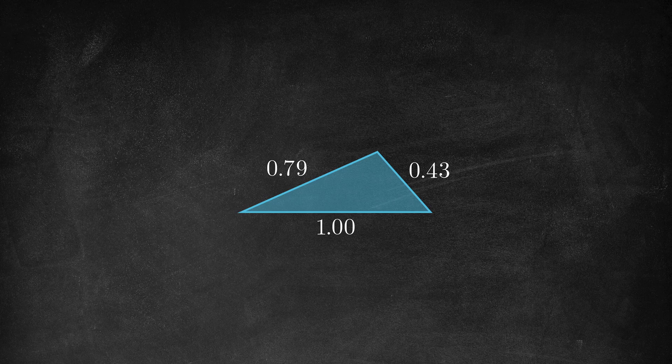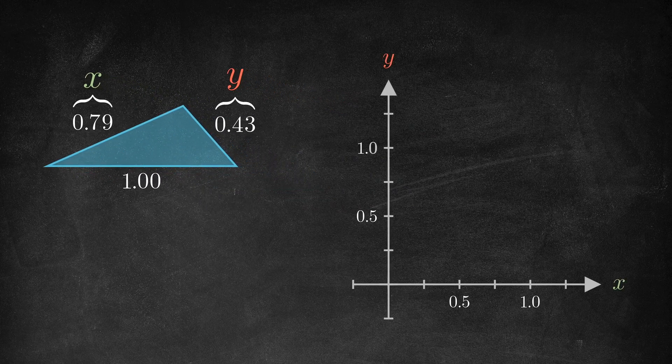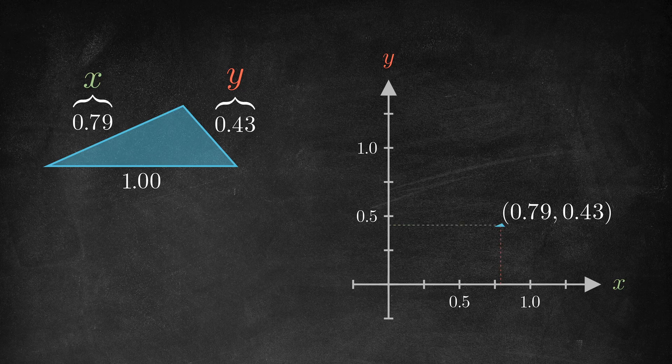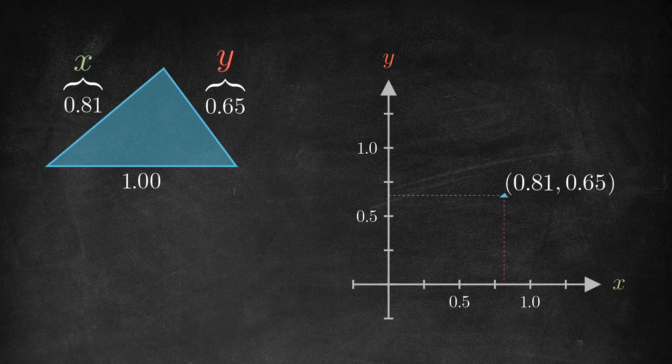And now label the next longest side x and the shortest side y. In this way, every similarity class corresponds to a unique pair of numbers, x and y, so we can think of each one as being a point in the xy coordinate plane.